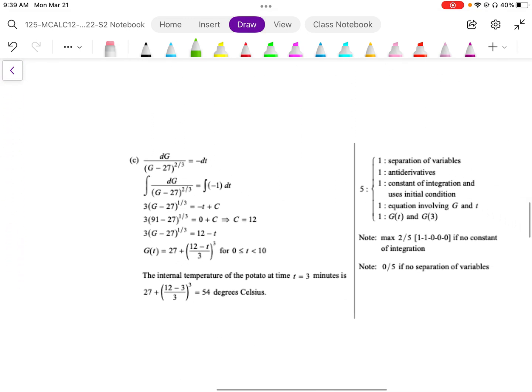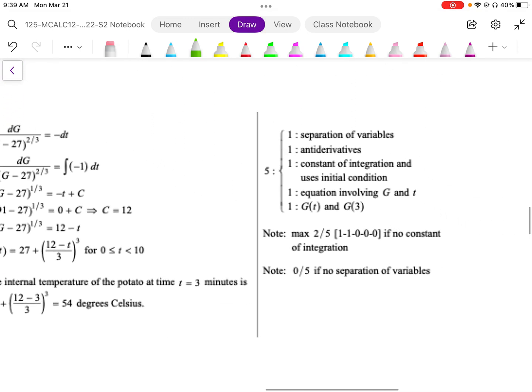If we look at the mark scheme, one mark is for the separation of variables, anti-derivative, solving for C, and then rewriting the equation as G(t), and then solving for G(3) gives us all 5 marks.